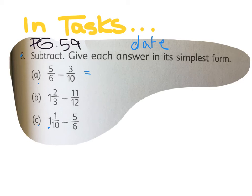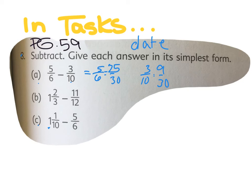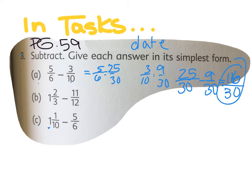Solution A: change to thirtieths — that's the lowest common multiple. Five sixths equals twenty-five thirtieths. Three tenths equals how many thirtieths? Multiply by three — nine thirtieths. Twenty-five thirtieths minus nine thirtieths equals sixteen thirtieths. Can we reduce? Yes — divide both by two — eight fifteenths.